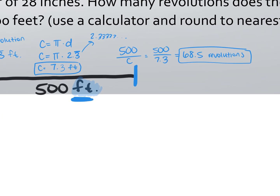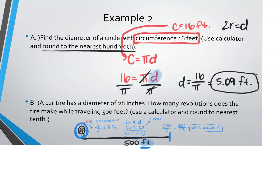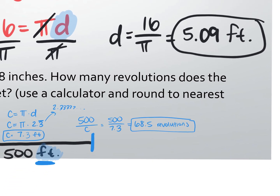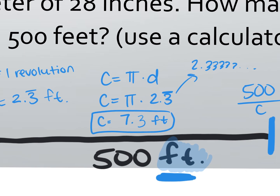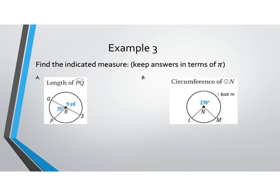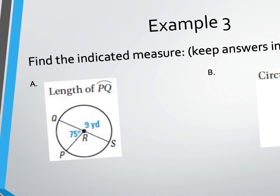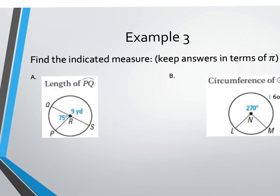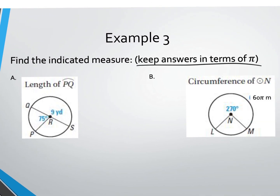This is where we're going to stop for today. In the previous examples, we divided by pi and multiplied by pi, giving us decimals. In example three, we're going to find different lengths using the arc length formula. It says find the indicated measure and keep your answers in terms of pi. So pi will be part of your answer.